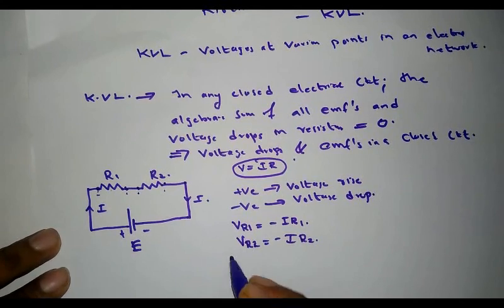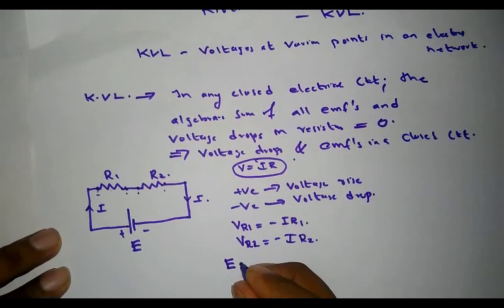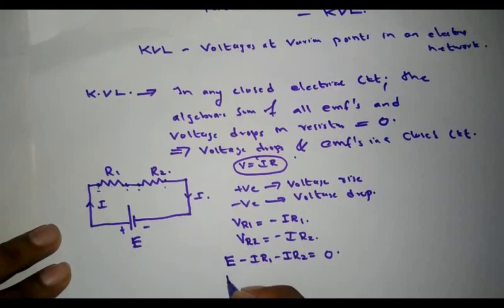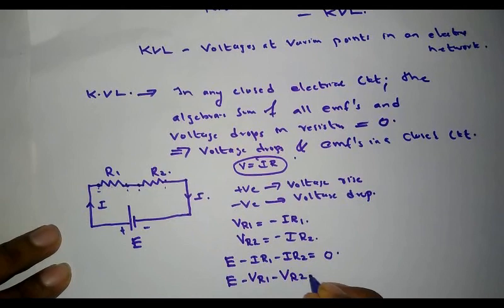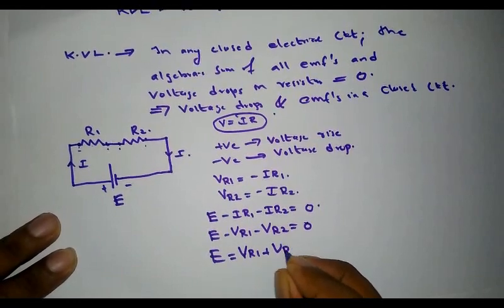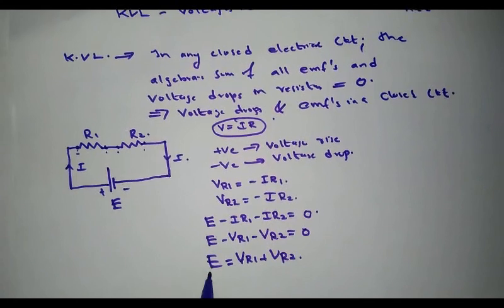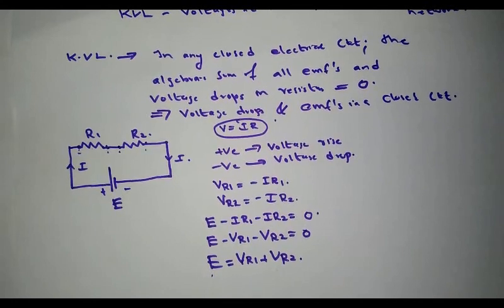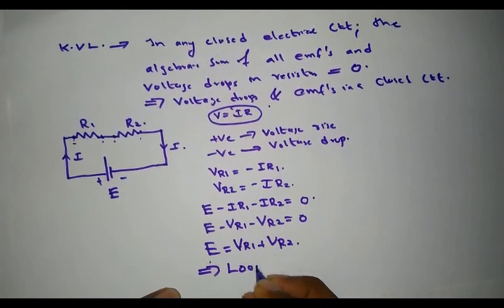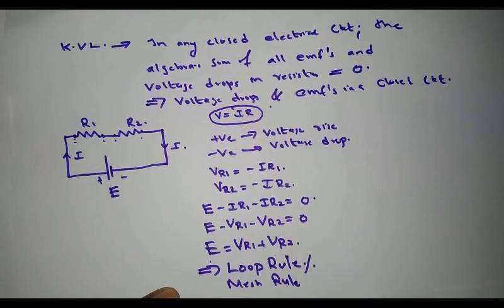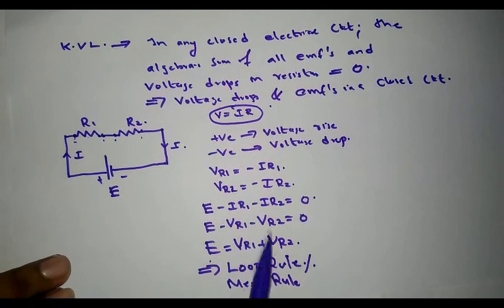Therefore, according to Kirchhoff's Voltage Law, we can write the algebraic sum of the EMF and the voltage drops as: E − I·R1 − I·R2 = 0. This can also be written as E = V_R1 + V_R2, meaning the total applied EMF is equal to the sum of the voltage drops across the two resistors. This law is also known as the loop rule or mesh rule.